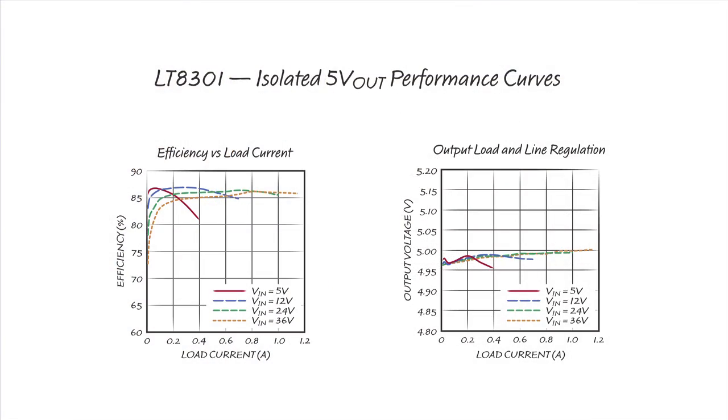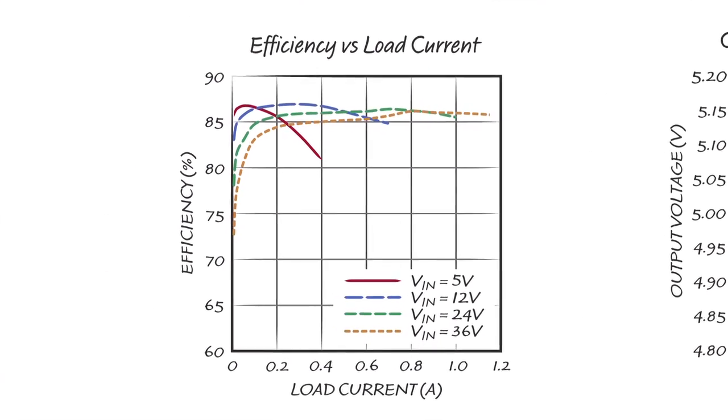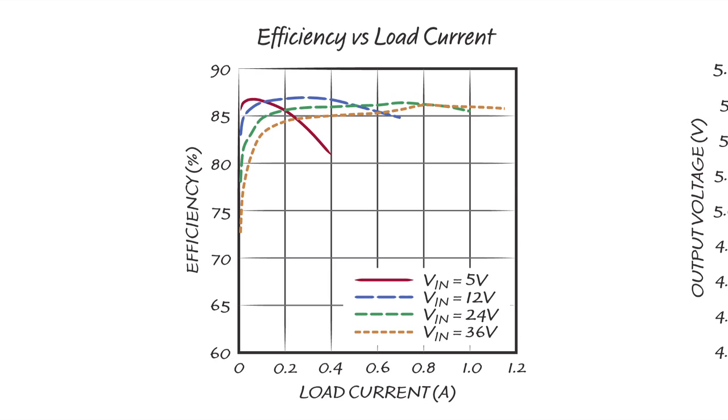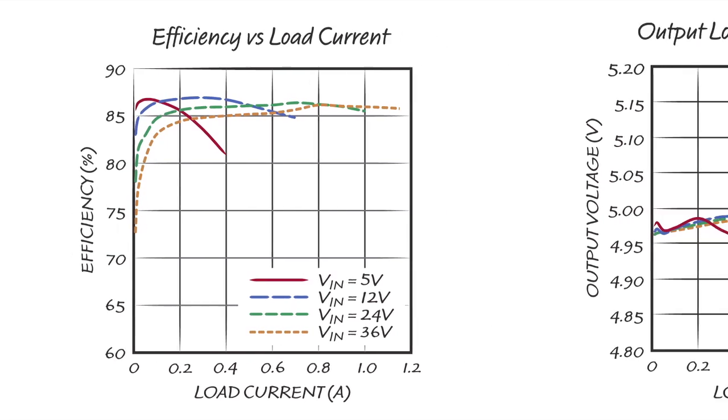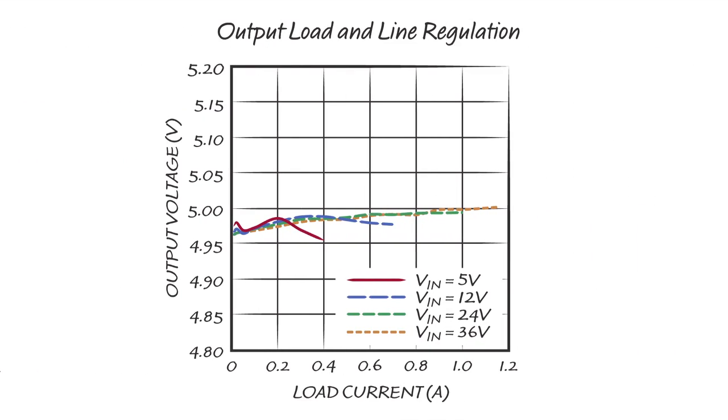The graph on the left shows the power efficiency versus load current. At 12-volt input, its power efficiency stays above 82% all the way from minimum load to full load and peaks at 87%. The graph on the right shows the output load and line regulation. It is better than plus minus 1% regulation across the full load and line range.